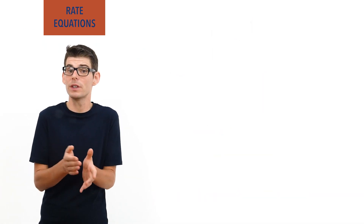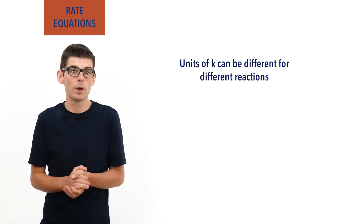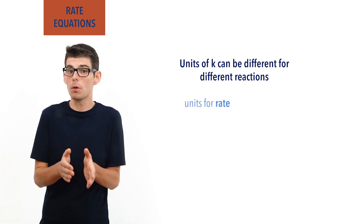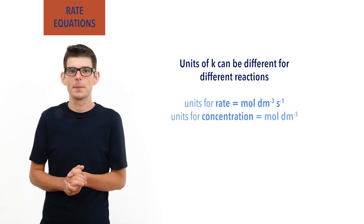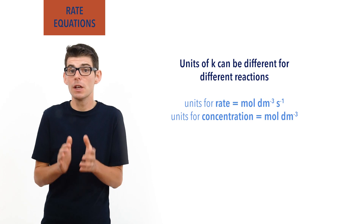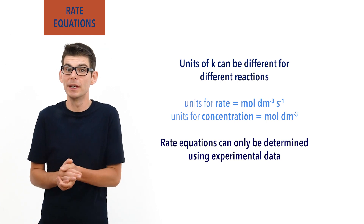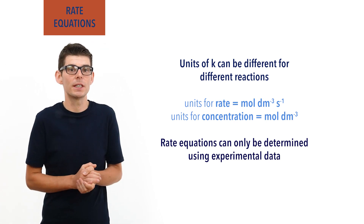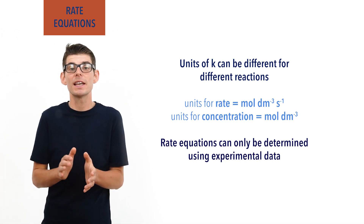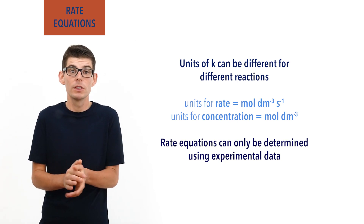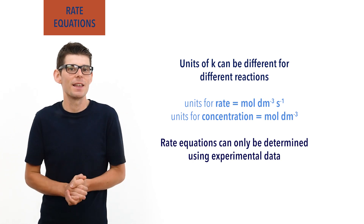Rate constants can also have different units for different reactions, depending on the molar ratios of reactant molecules involved. The units for rate are usually moles per decimetre cubed per second, and the units for concentration are moles per decimetre cubed. It is important to point out that rate equations can only be determined using experimental data, just like when determining the order of a reaction with respect to a particular reactant. Rate equations can provide really useful information to help us predict how reactions occur, such as with mechanisms in organic chemistry. This has been covered in a separate video; check the links in the description below.